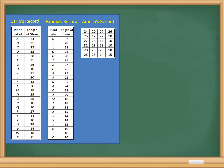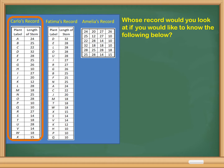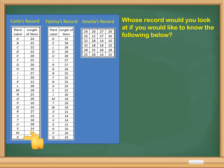We will use these following records to answer the questions that will appear on the right side. Whose record would you look at if you would like to know the following? For the observation of a particular plant letter, we will look at Carlos' record, because in the first column, the data are already arranged in alphabetical order.